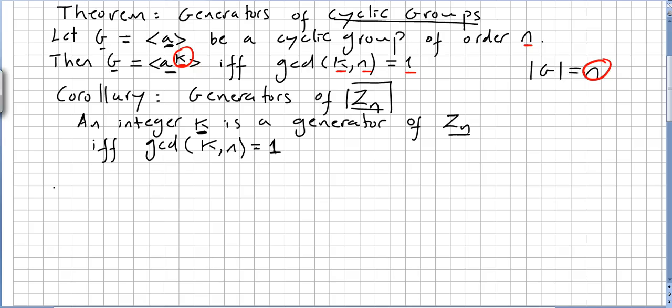One example is the dihedral group D6. You can check that one of the generators of D6 is the rotation of 60 degrees. And then you check that the rotation of 60 degrees has order 6. This is really easy to check. Now you use this theorem and you will easily check that...